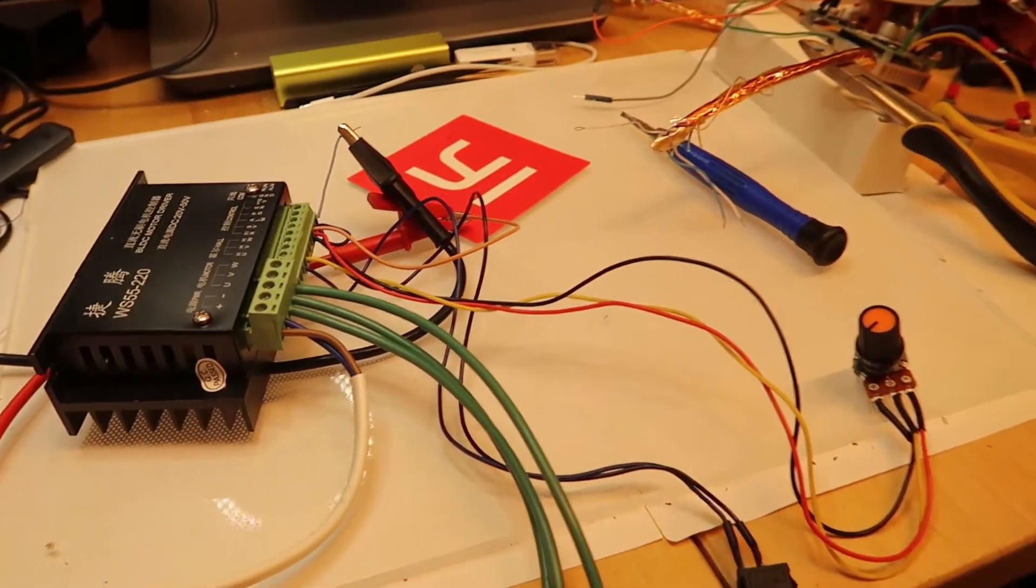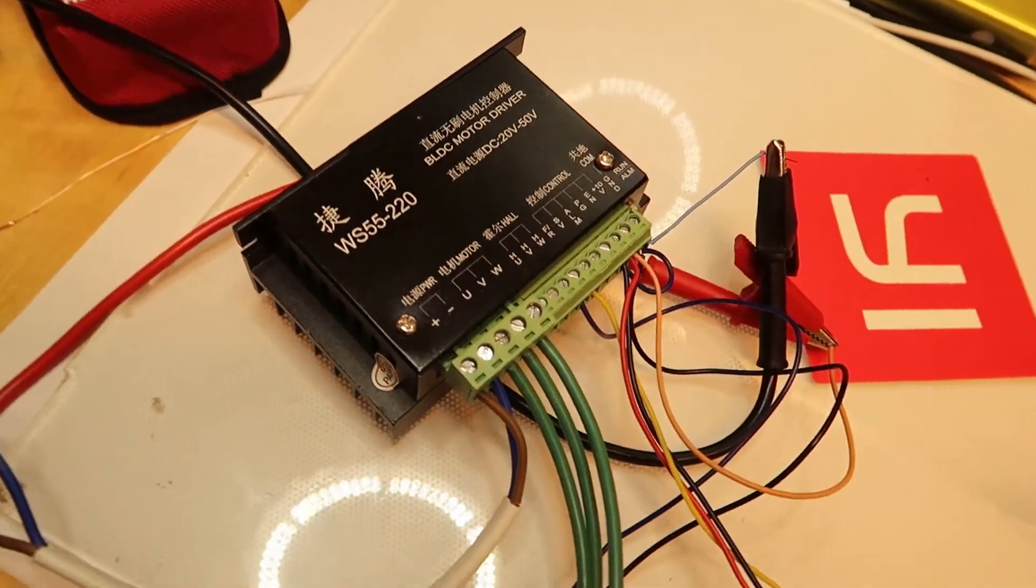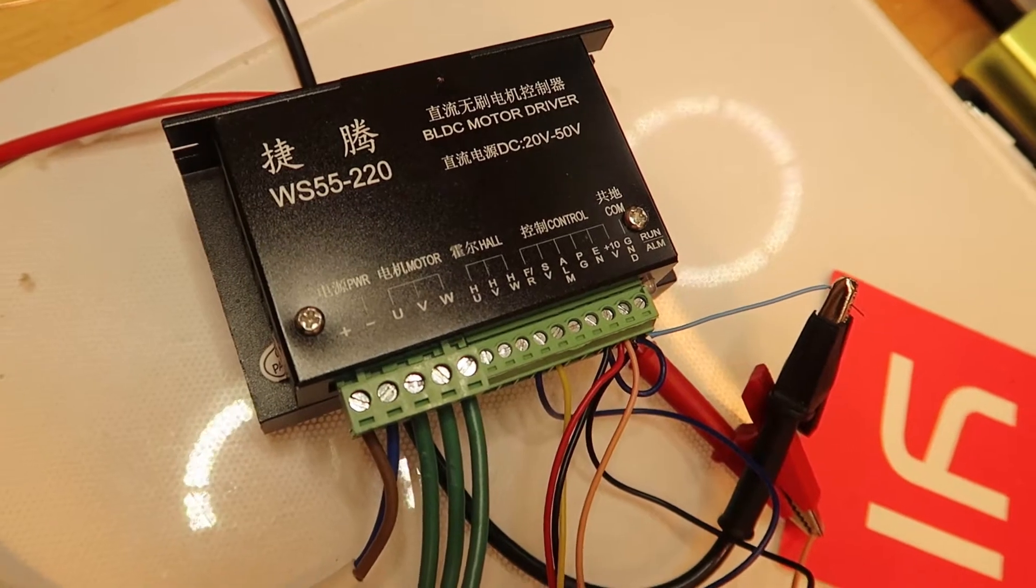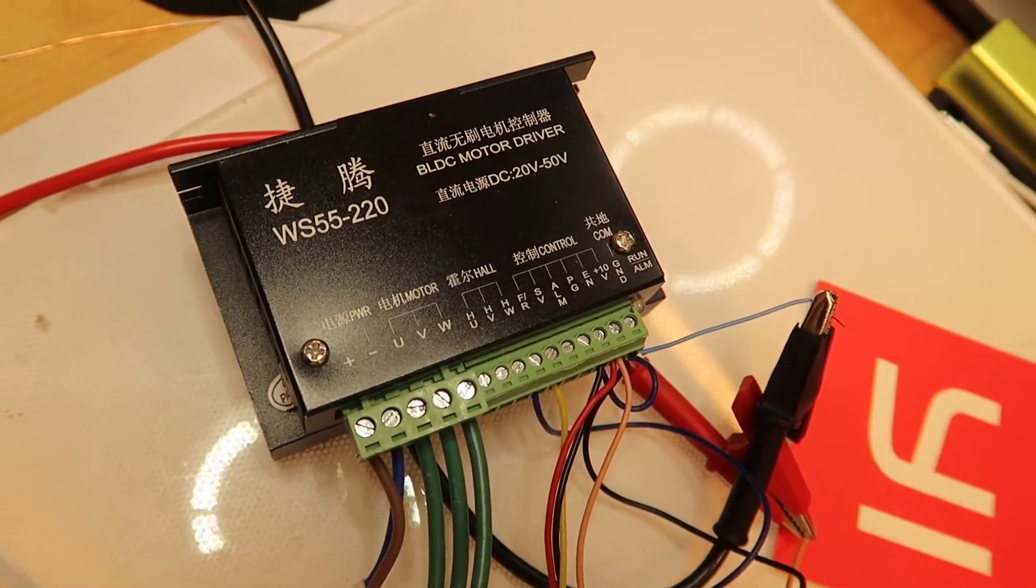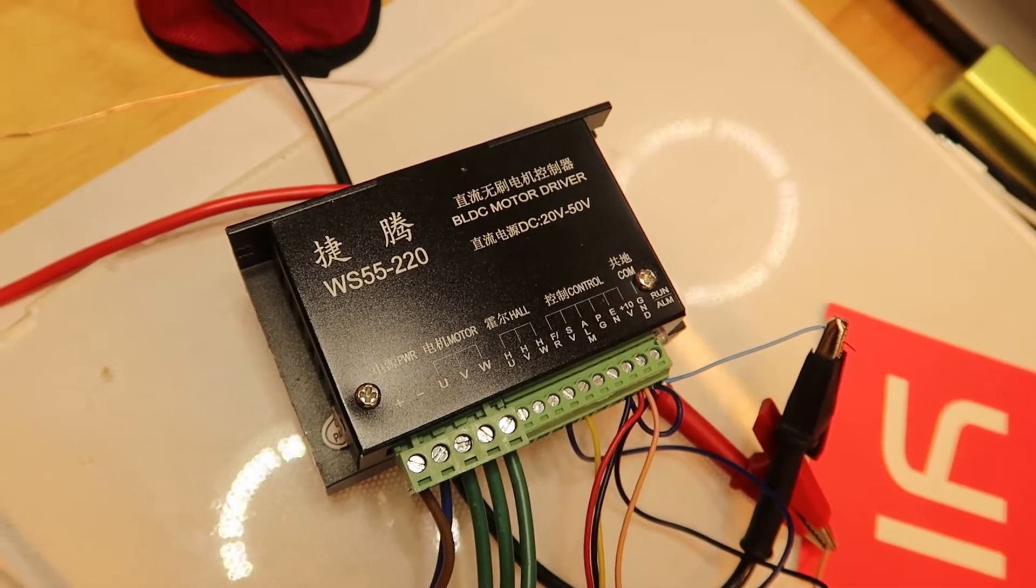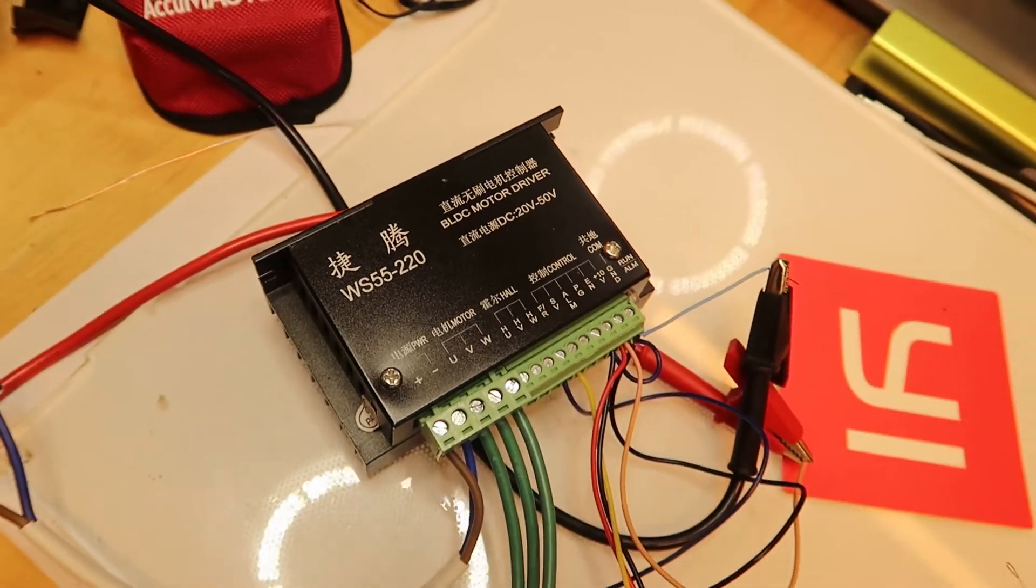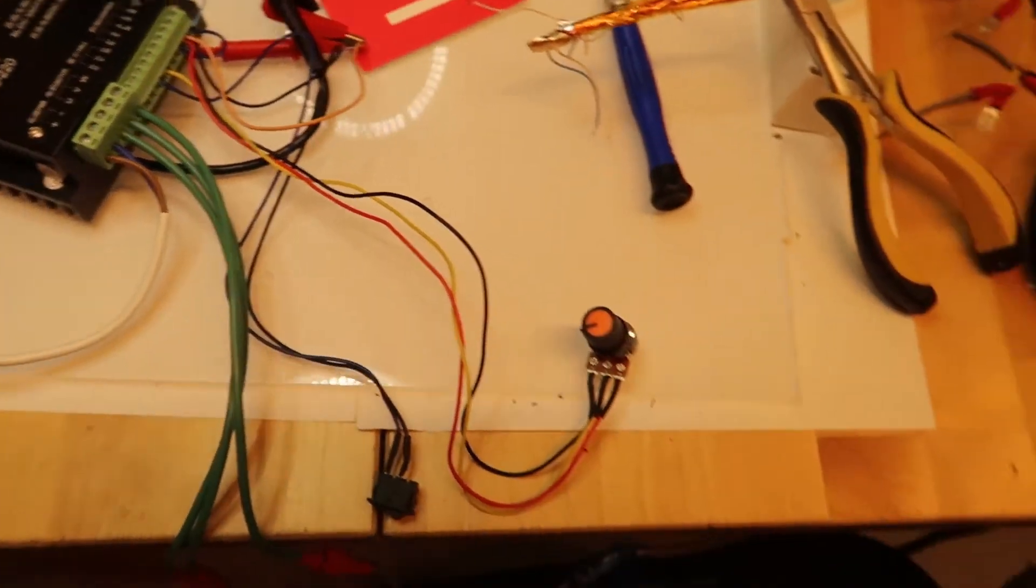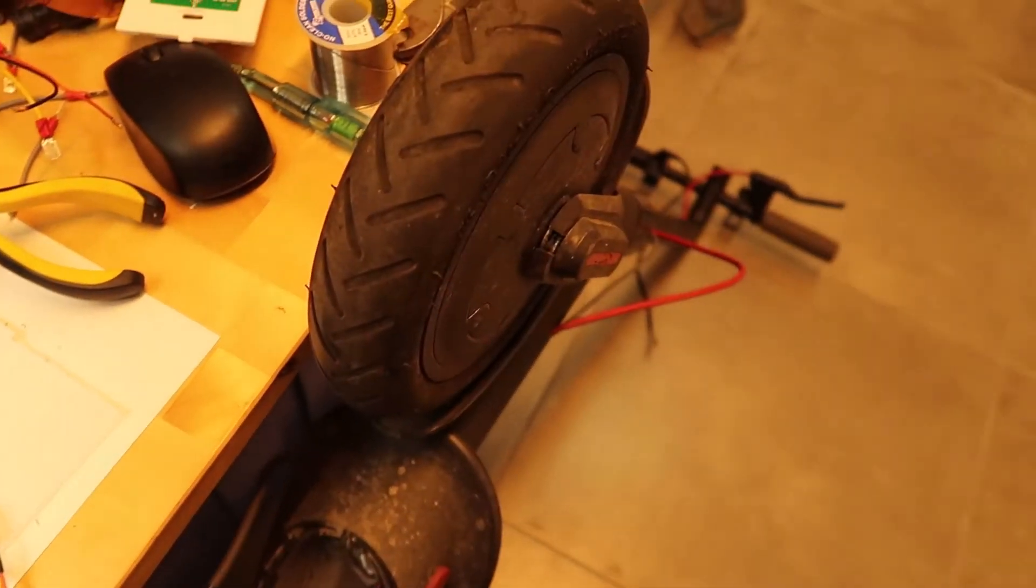Now I'm connecting to this motor controller. This is the WS 55 220, a 20 volt to 50 volt brushless motor driver. The thing I want to test is if I can use it for some way of cutting.